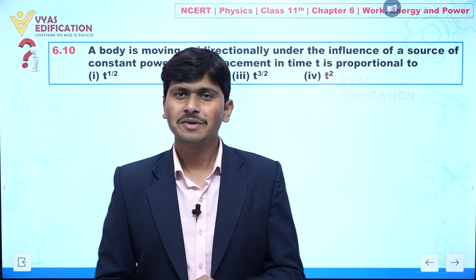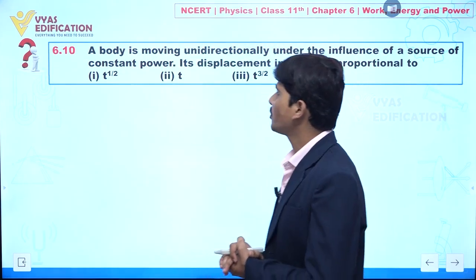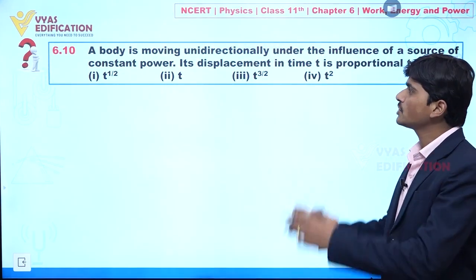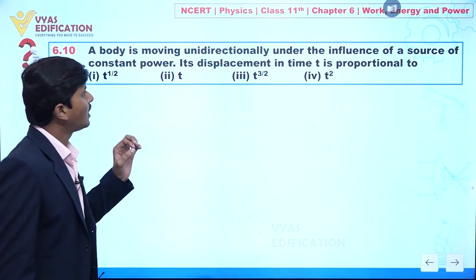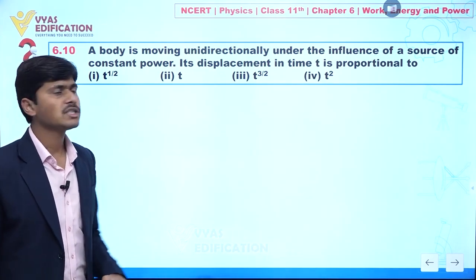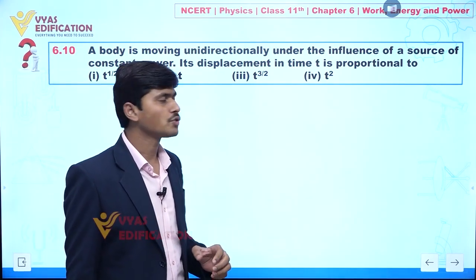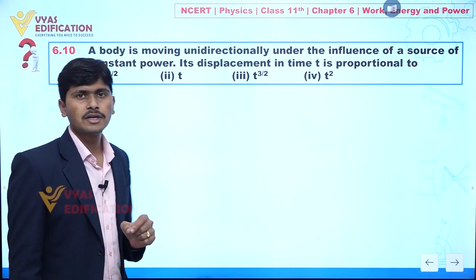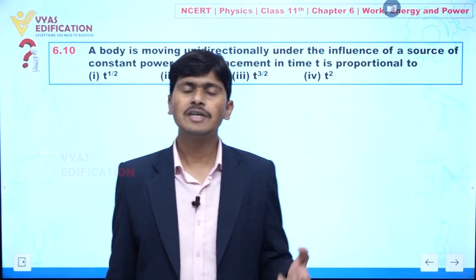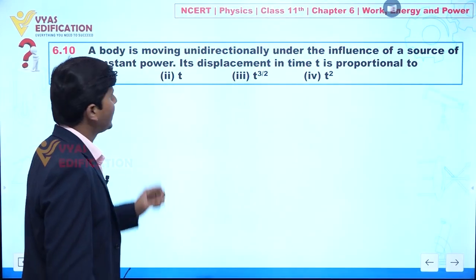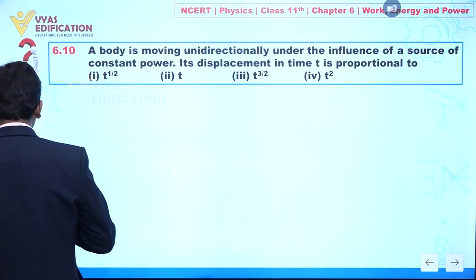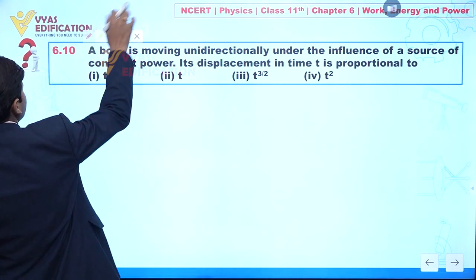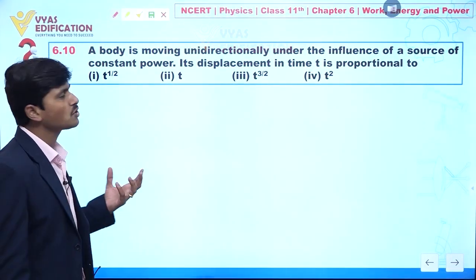We are going to discuss question number 6.10. In this question, a body is moving unidirectionally under the influence of a source of constant power — meaning the power delivered is constant. Its displacement in time t is proportional to what? A body is moving unidirectionally under the influence of a source of constant power.